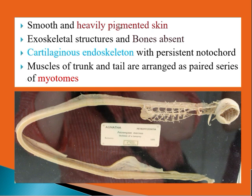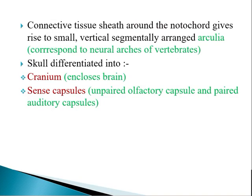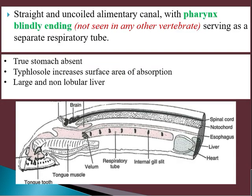The skin is smooth and heavily pigmented with no scales, meaning no exoskeleton. The endoskeleton is cartilaginous — bones are totally absent — and there is a persistent notochord. The muscles of the trunk and tail are arranged as paired series called myotomes.